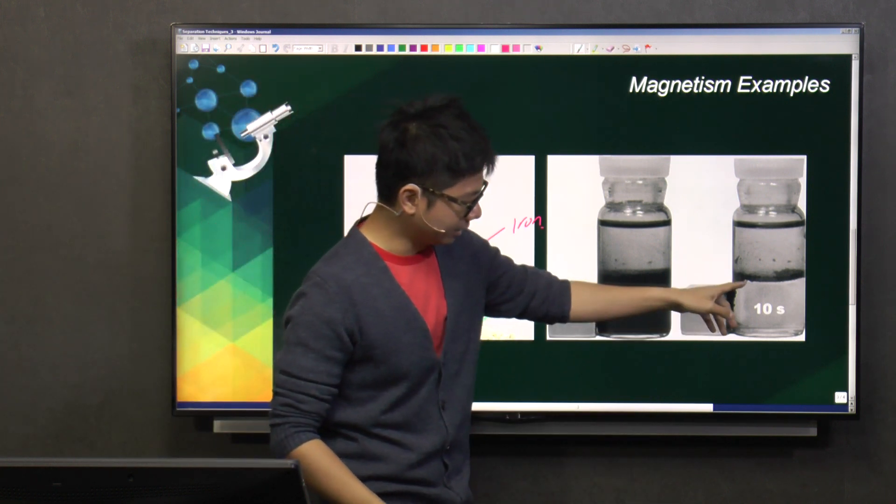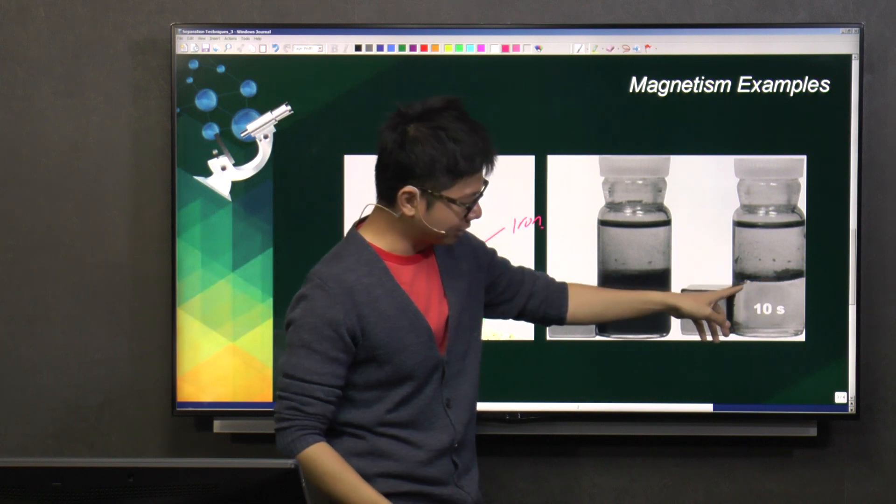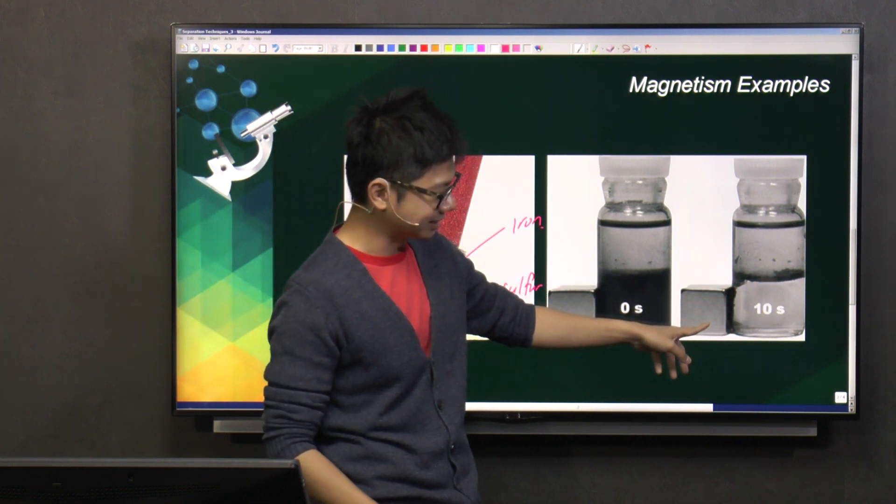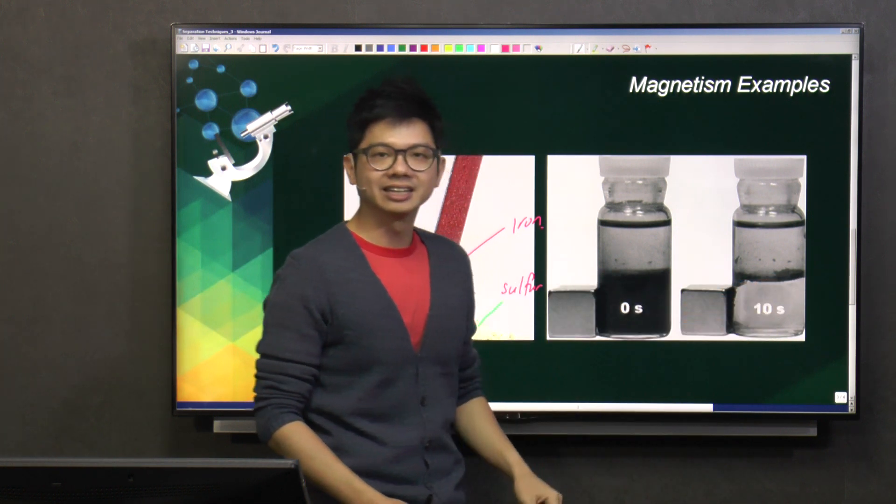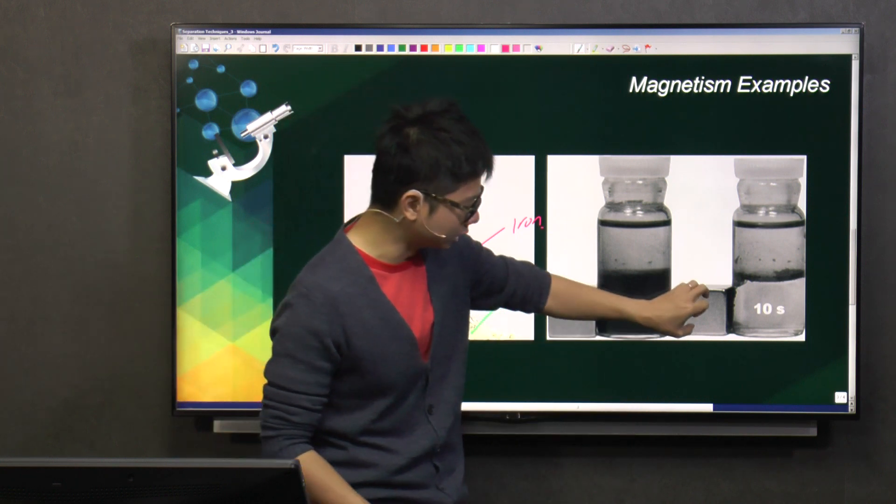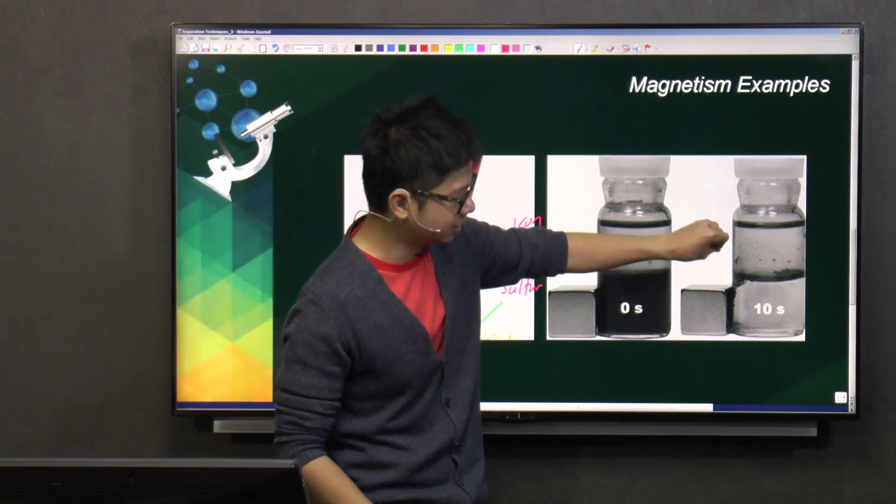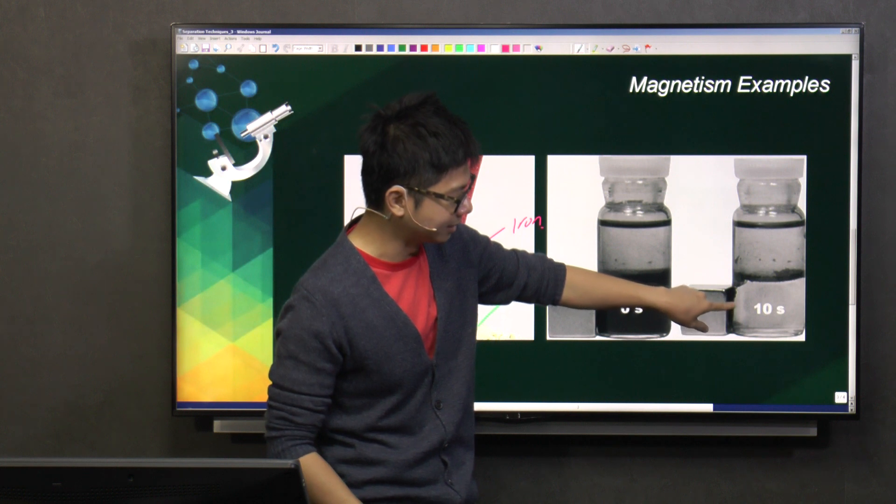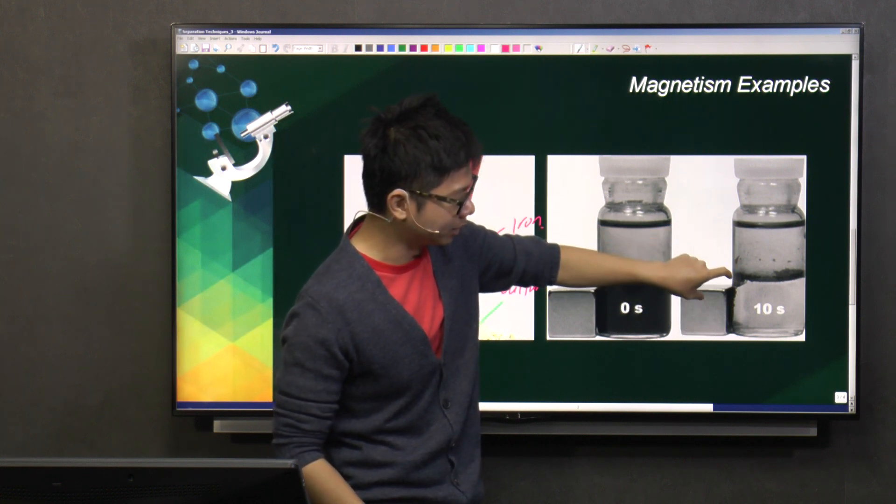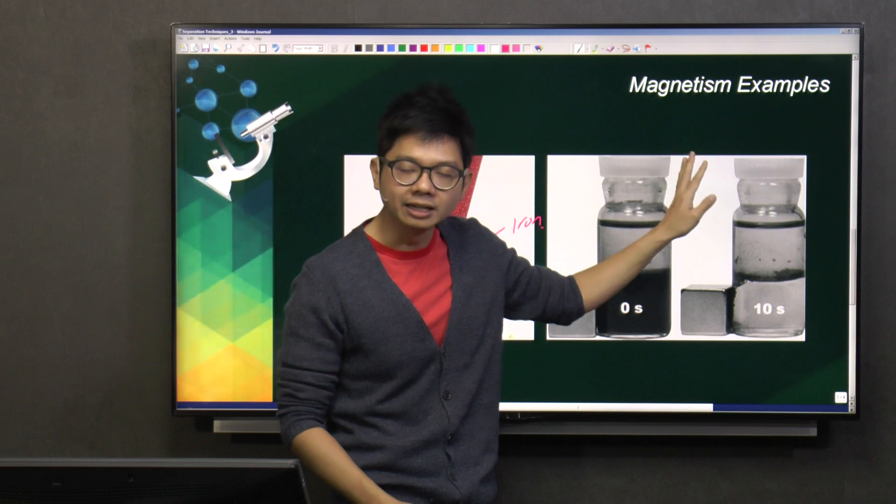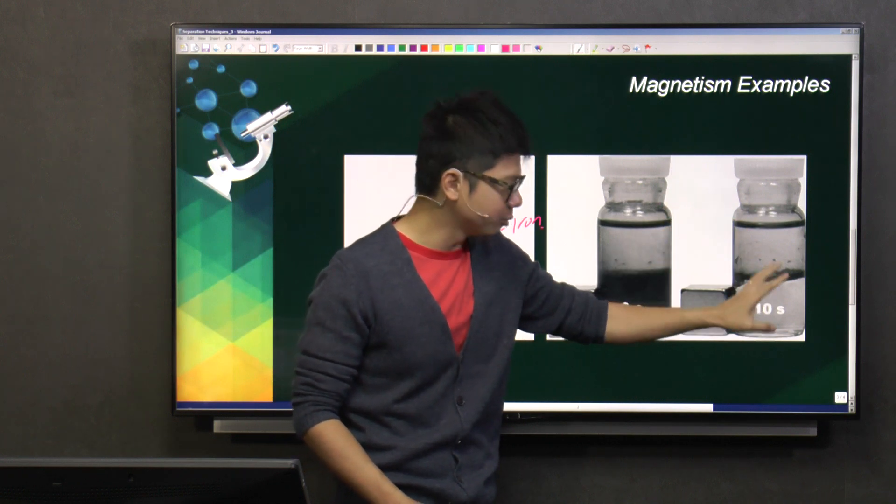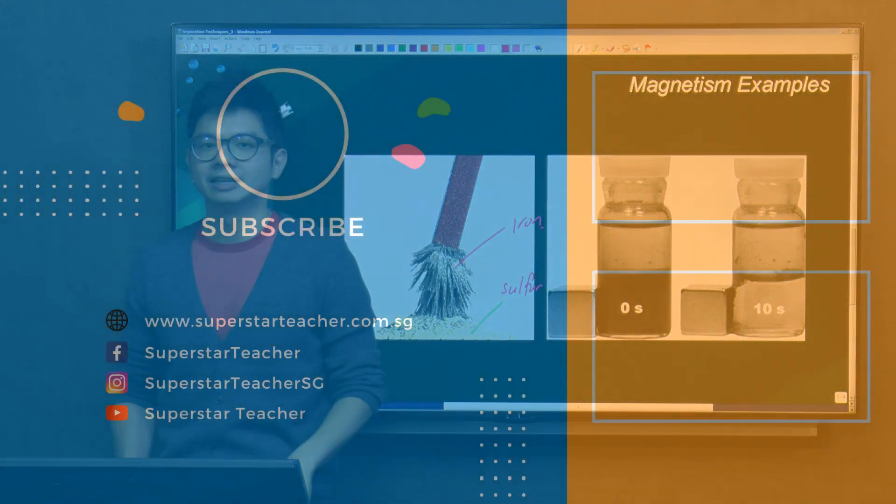So, after a while, you find that all the iron filings, they will be attracted to the magnets. And you see that the water is now clear. So how to remove it? Slowly slide up the magnet, and then the iron filings will follow the magnet, and then you can remove it at the end. Then you get iron filings, and you have pure water.